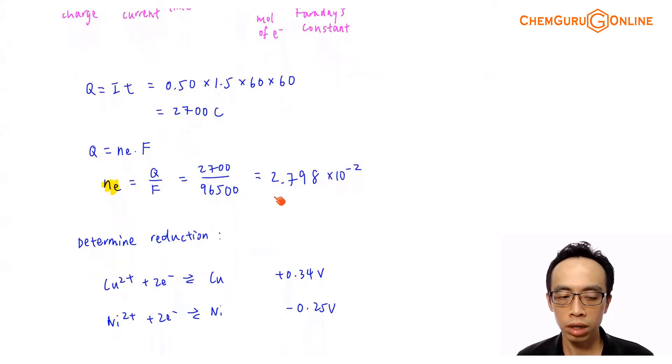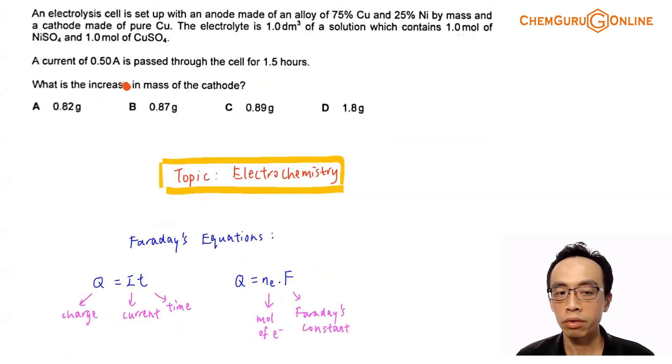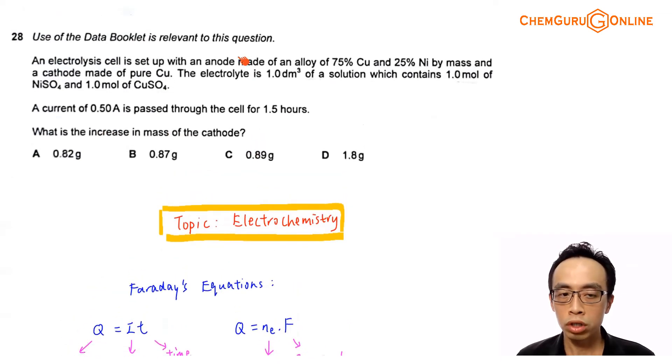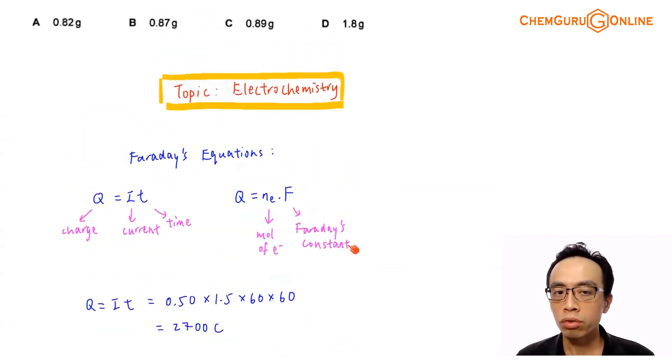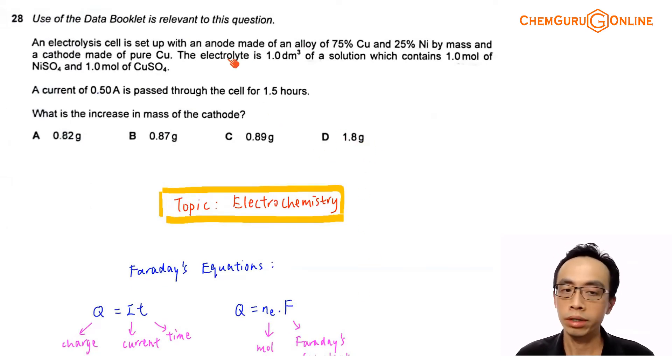Let us determine the process taking place involving reduction because the question asks us to determine the increase in the mass of the cathode. We don't really need to worry about the anode because it's an alloy involving 75% copper and 25% nickel. Since inside the electrolyte I already have 1 mol per dm³ of nickel sulfate and 1 mol of copper sulfate at 1 mol per dm³, and the number of moles of electrons involved is 2.798 × 10⁻², which is less than 1 mol, we don't need to be too concerned about the process at the anode. We only need to worry about what's in the electrolyte, which is 1 mol of nickel 2+ and 1 mol of copper 2+.